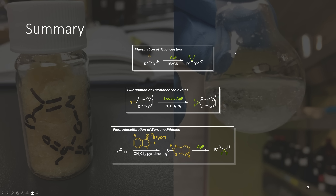In summary, I was able to prepare a number of difluoroethers from thionoesters using silver(I) fluoride. We were also able to prepare a number of thionobenzodioxols which could be converted into difluorobenzodioxols, also using silver fluoride. Finally, I developed a suite of reagents which could be used to prepare difluoromethyl ethers from the corresponding alcohols. This also worked on heteroaromatics, and this chemistry is promising for potential application in PET radio tracers moving forward.